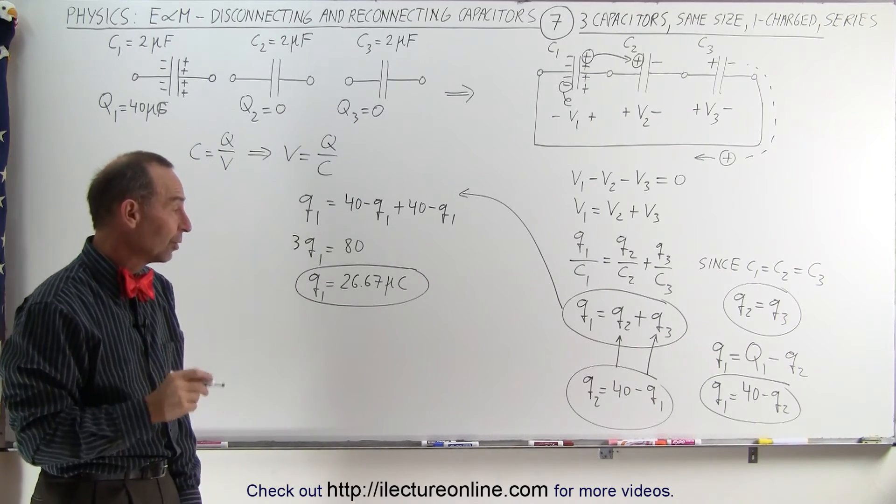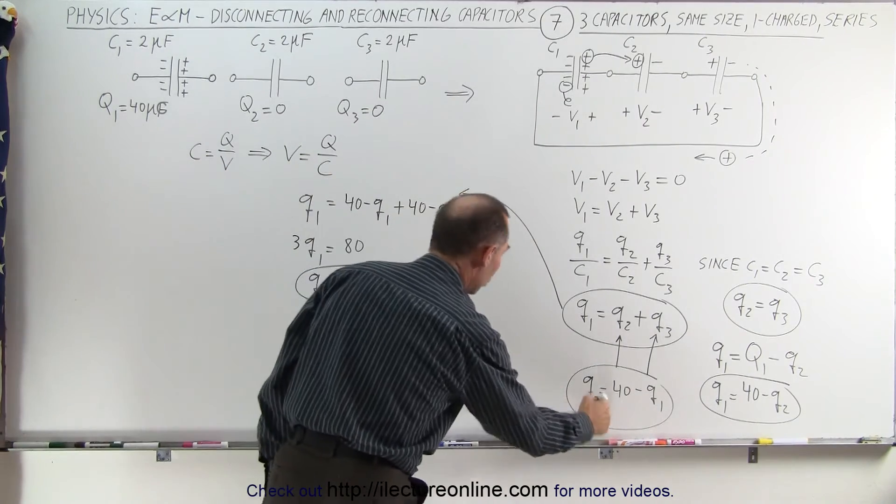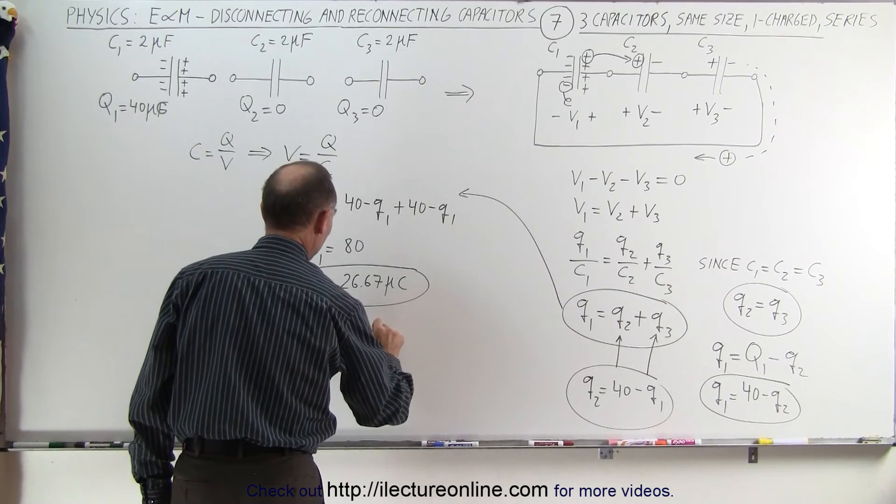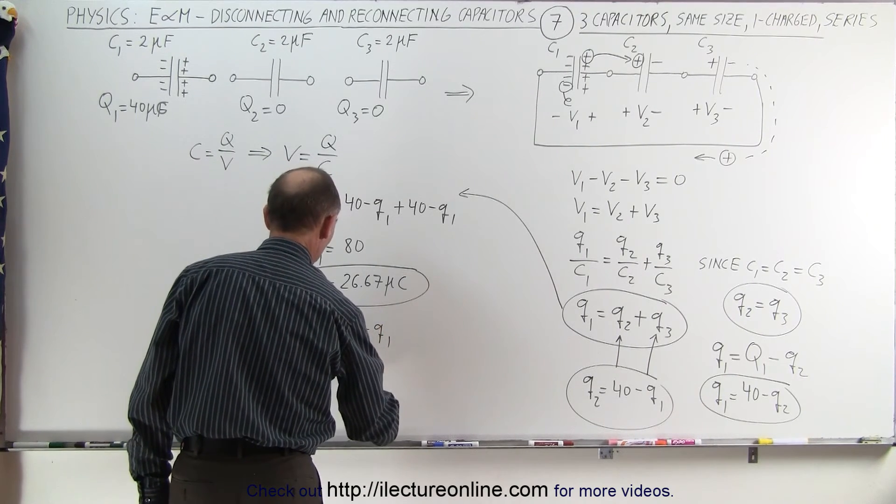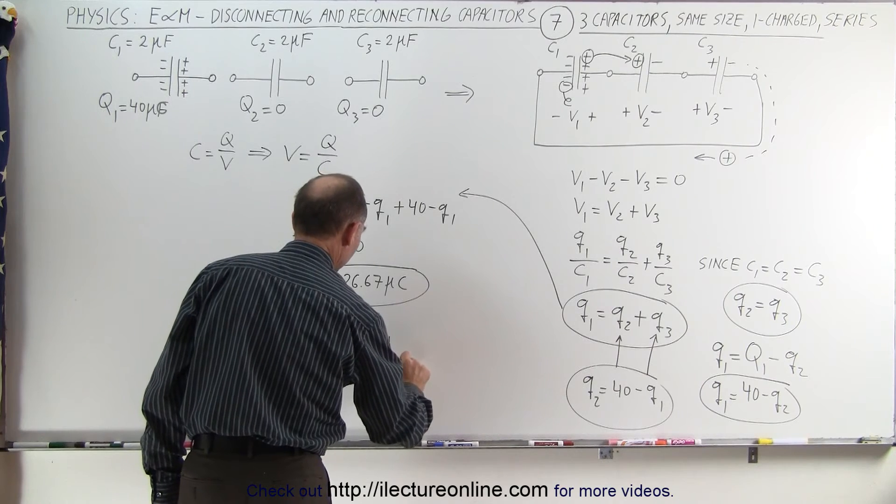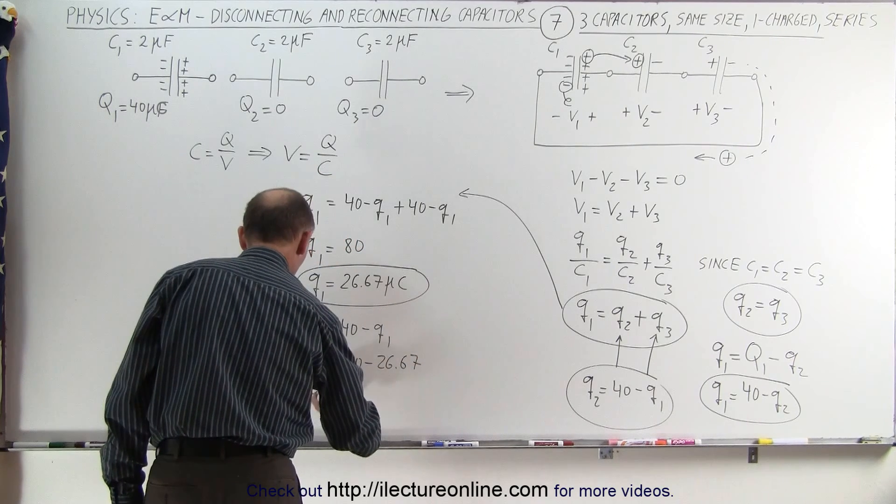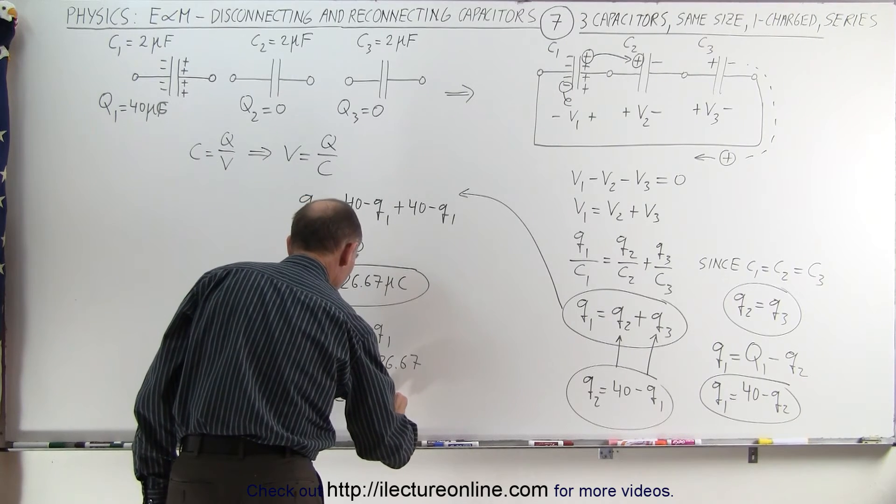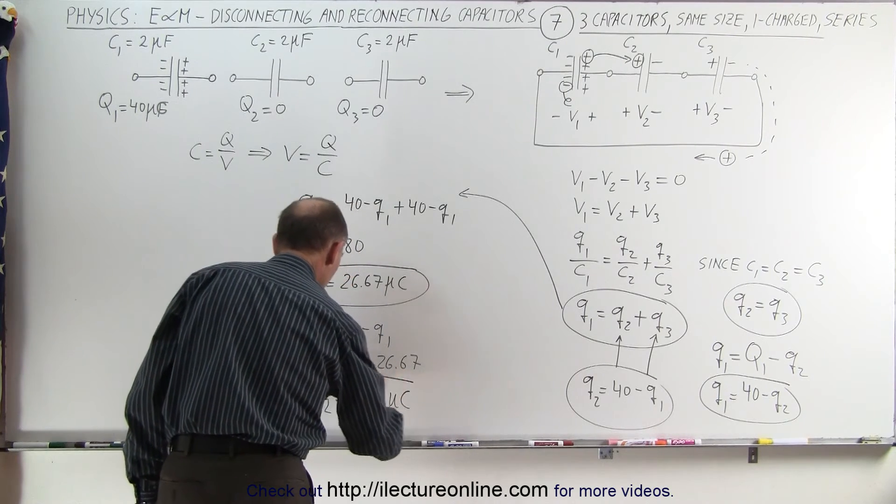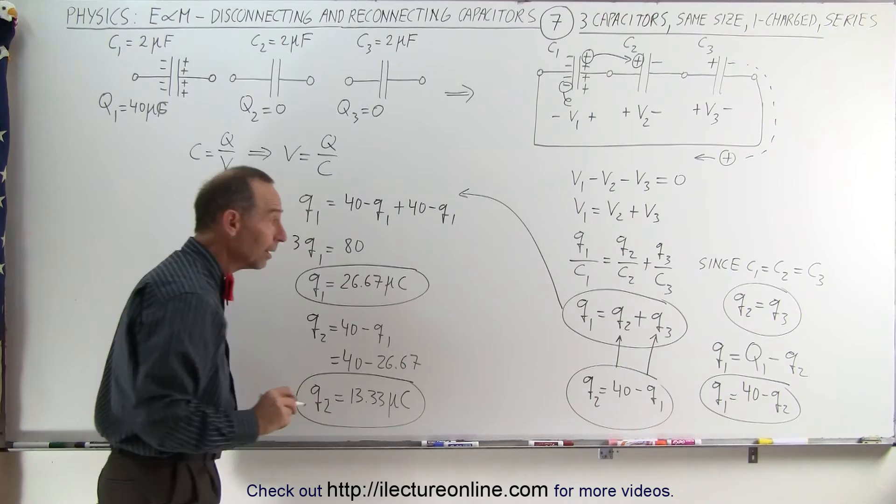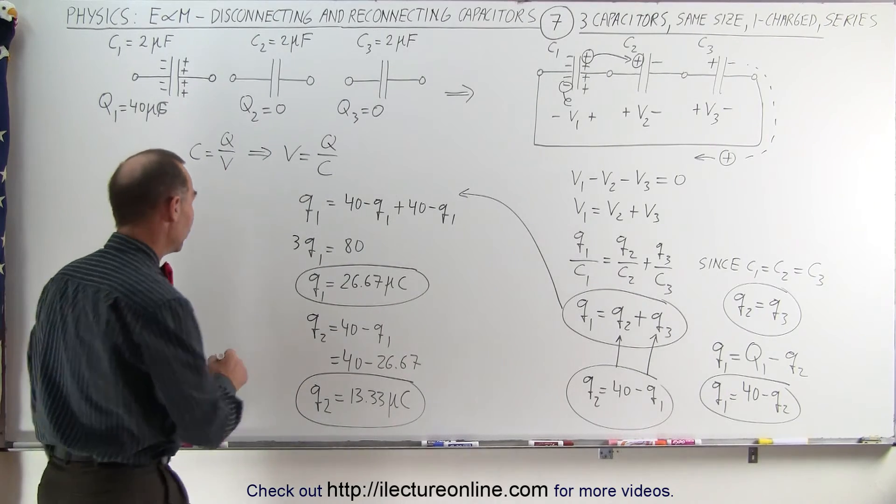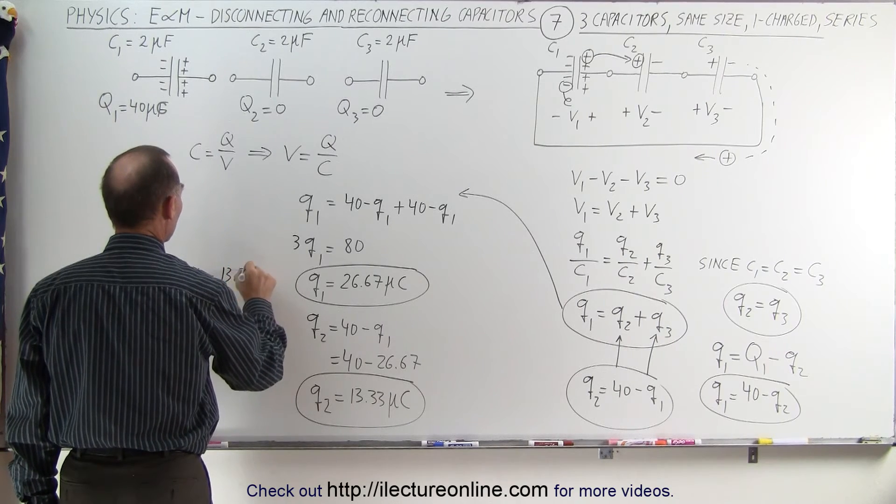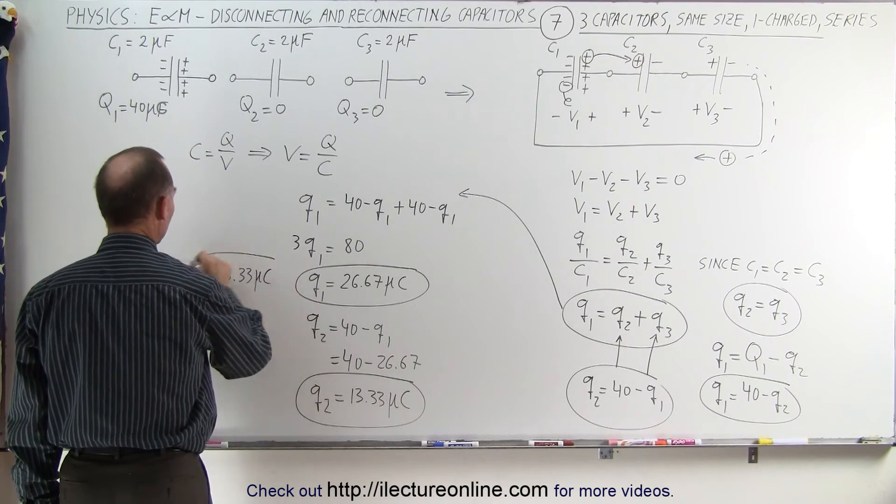Since Q1 equals that, we can then find Q2. Q2 equals 40 minus Q1, which equals 40 minus 26.67, or Q2 equals 13.33 microcoulombs. And since Q3 equals Q2, Q3 is also equal to 13.33 microcoulombs.